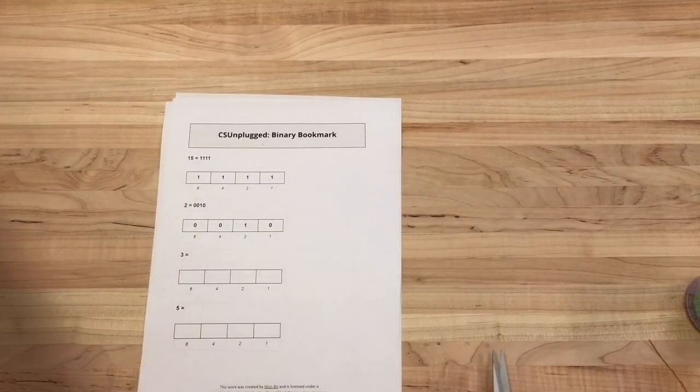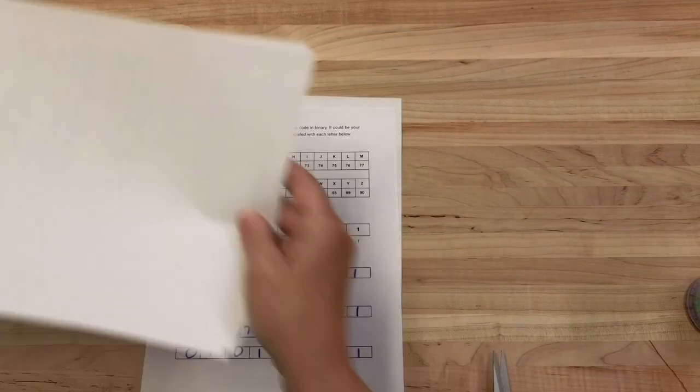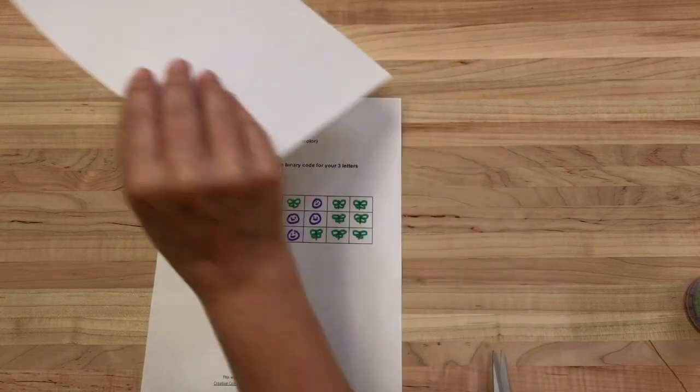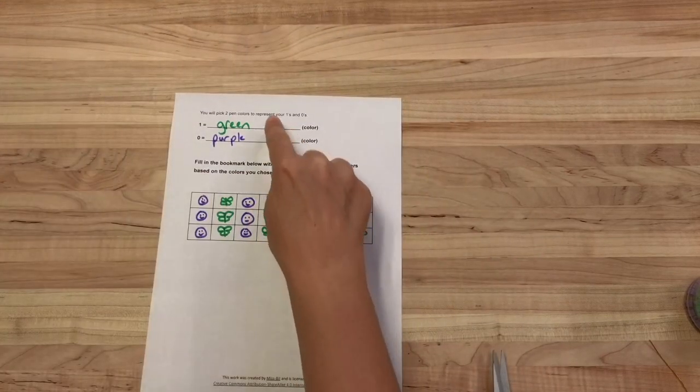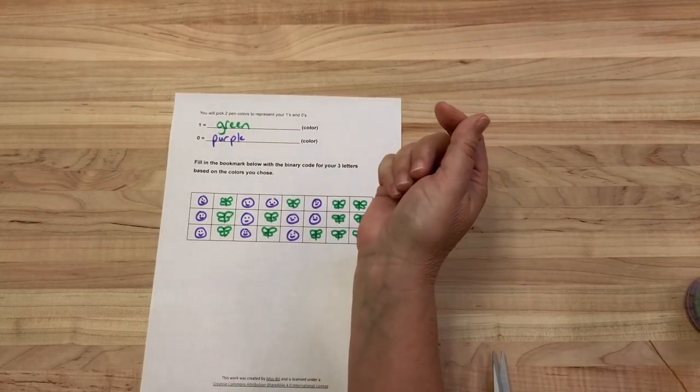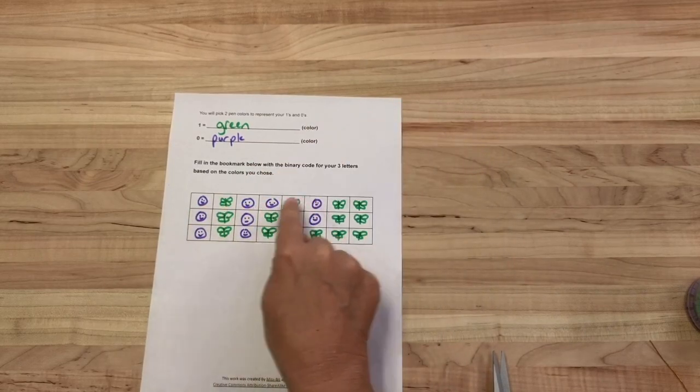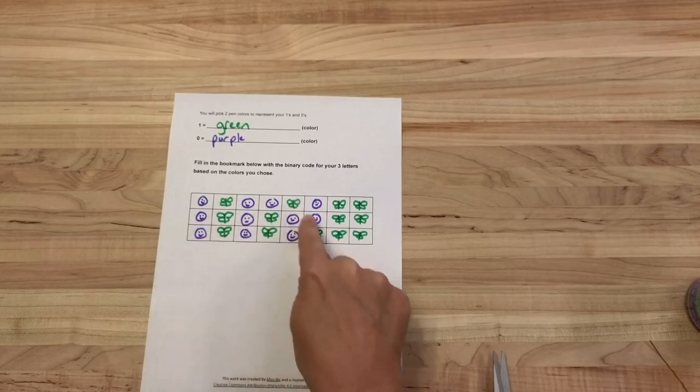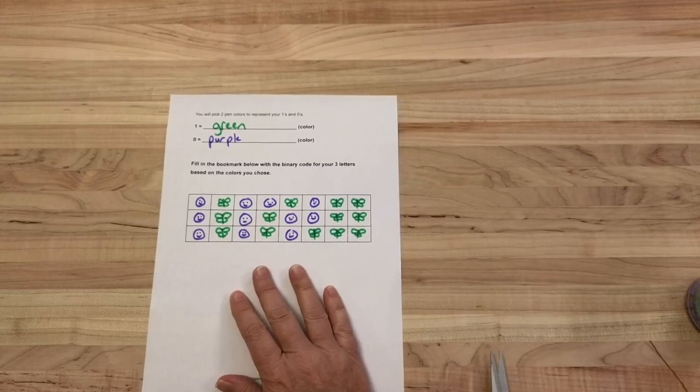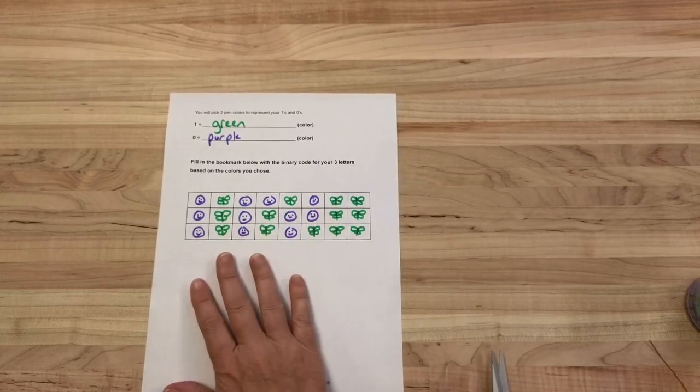For that, you're going to do the same activity of learning how to do this. You're going to create the same binary code for your letters, but you're going to represent zeros and ones with different colors. And then you're going to put those colors as zeros or ones like I did, and then you can create shapes around that. And then if you have access to a laminator, you can cut this out and create a really great bookmark.